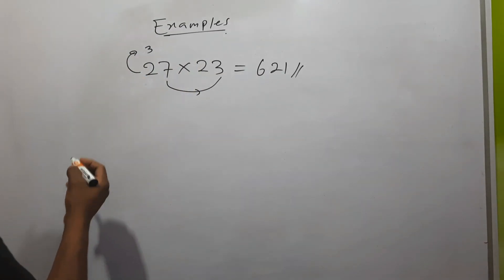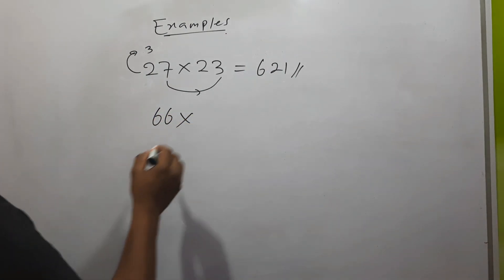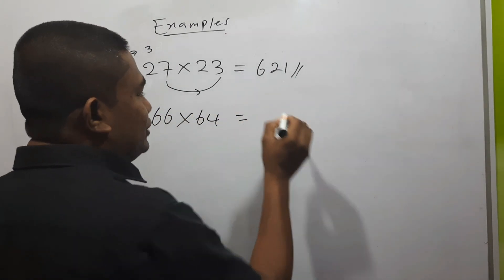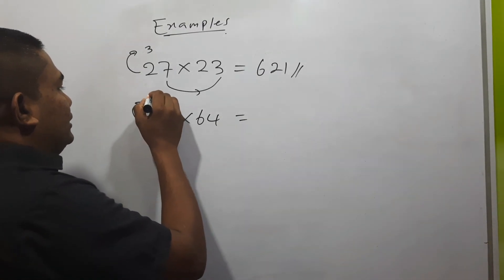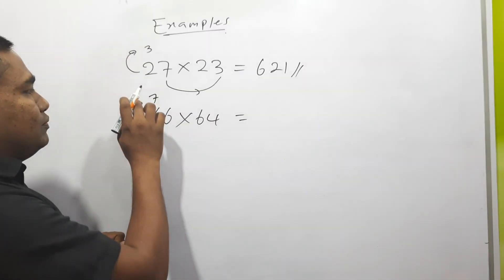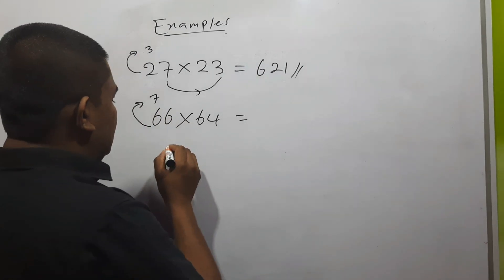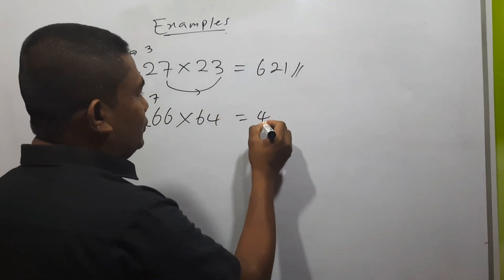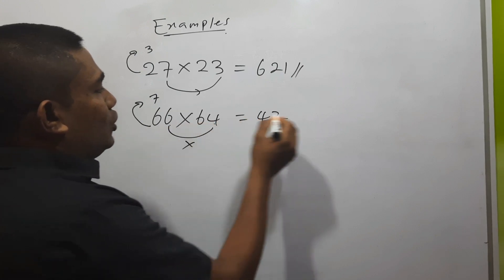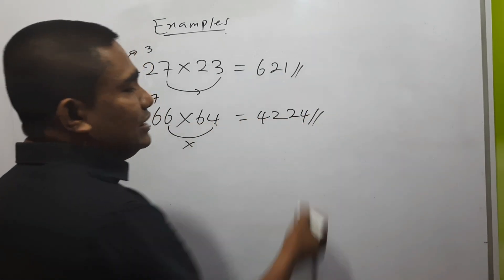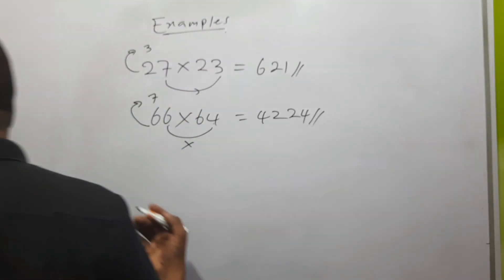Next example: 61 into 64. You need to add one to the 10th place number — 6 plus 1 is 7. 6 into 7 is 42. Then multiply these two unit place numbers: 6 into 4 is 24. Very simple — within a few seconds you can get the answer.